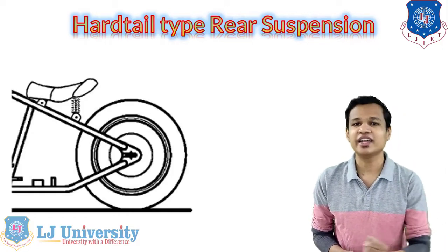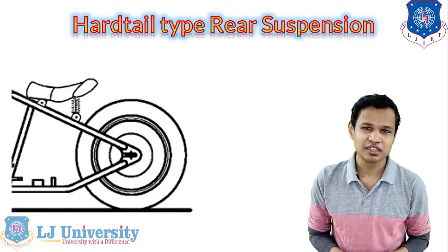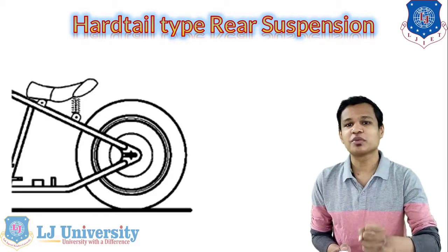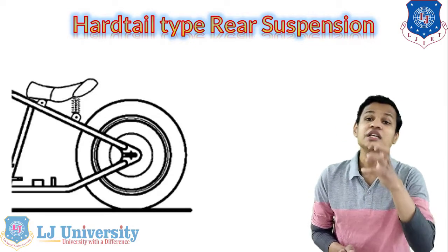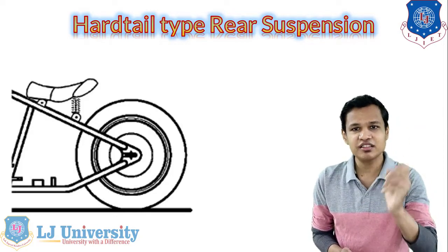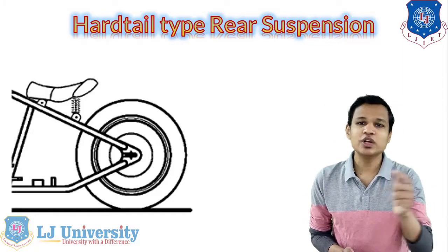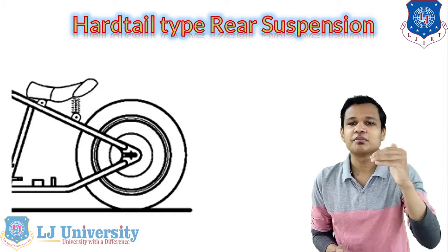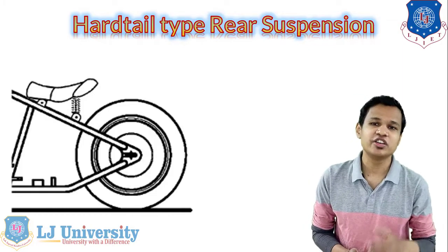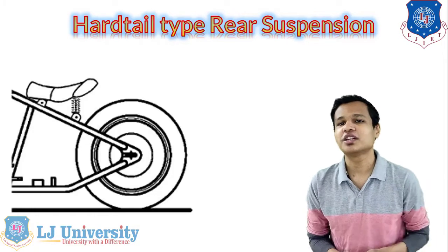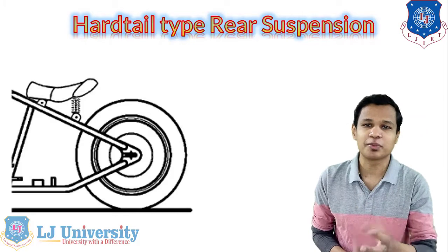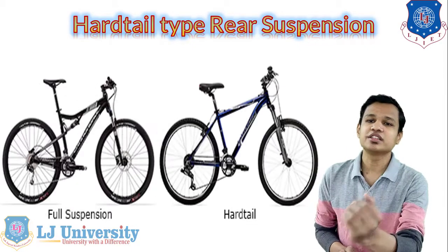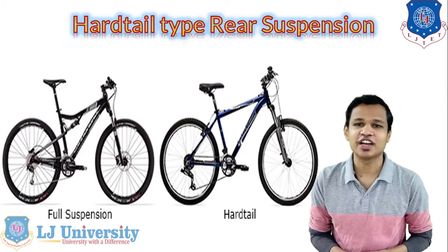The first type is the hard tail rear suspension. The name suggests it is a hard suspension system, not a soft type. In the hard tail suspension system, there is no shock absorber assembly or spring assembly attached at the rear. One spring is attached below the seat and that is the only suspension provided. Two linkages provide a triangulation at the rear, and the suspension given is only below the seat. This type is not comfortable at all and is generally used in bicycles — it was an earlier approach for rear wheel suspension.